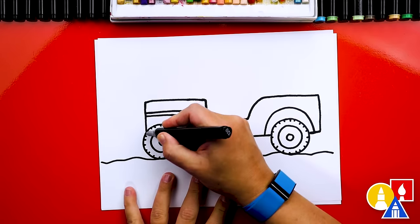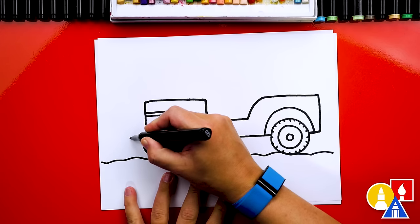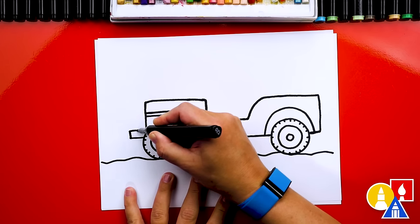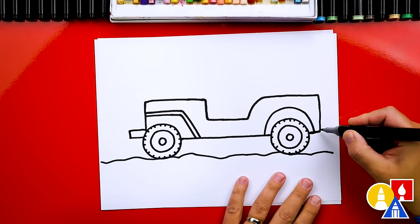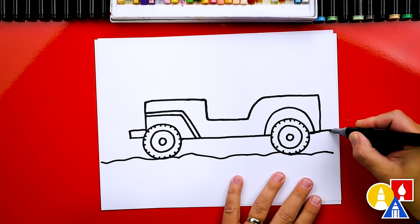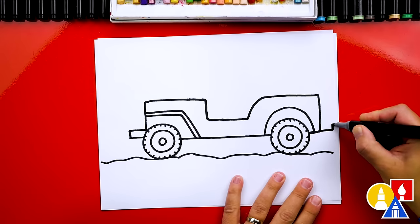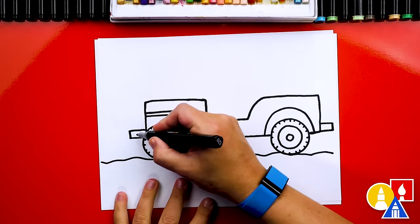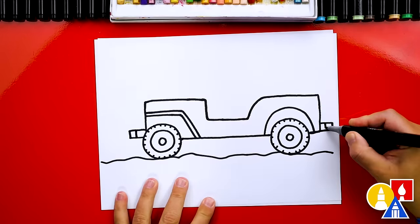Now we're gonna add the front bumper. We're gonna draw it coming out, up, and then back in. They're really basic bumpers. So we're gonna draw it out, up, back in. We could also add another line here and here.